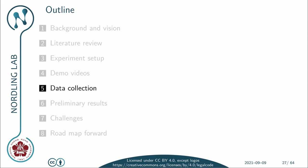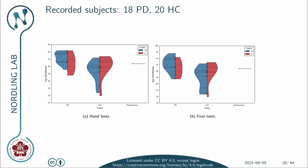Let us now take a look at the data we have collected so far. We have collected data from 18 PD patients and 20 healthy controls, and one subject that has Parkinsonism — meaning that patient doesn't fulfill all the criteria for being diagnosed with Parkinson's disease but has some symptoms.